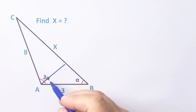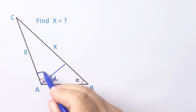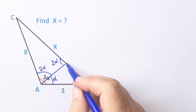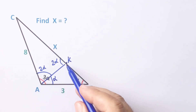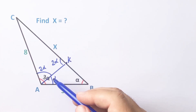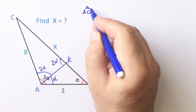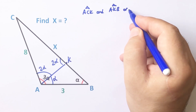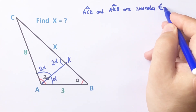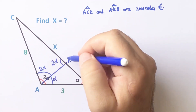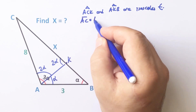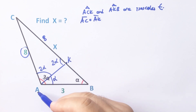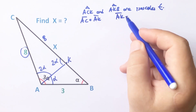First of all, if we create an isosceles triangle, two alpha is left here, and we know that two interior angles equal one exterior angle. Let's call this point K. We get two isosceles triangles: triangle ACK and triangle AKB are isosceles triangles. Therefore AC must equal CK, so if it is 8 units, this length must also equal 8 units.